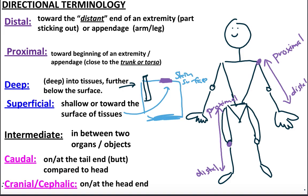Intermediate is used in reference to two objects — something that is between two body parts. For example, your heart is intermediate to your two lungs. Your nose is intermediate to your eyes because it's between them. So intermediate just means in between two things.